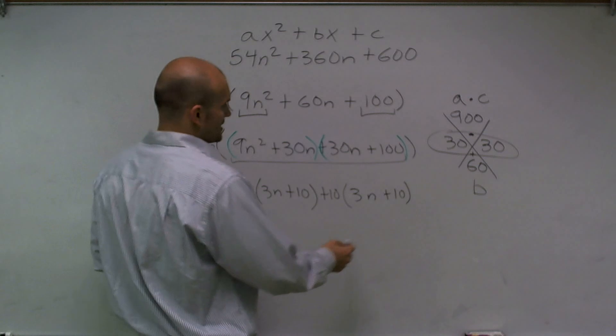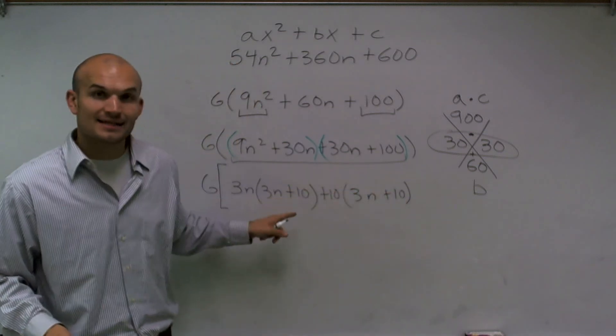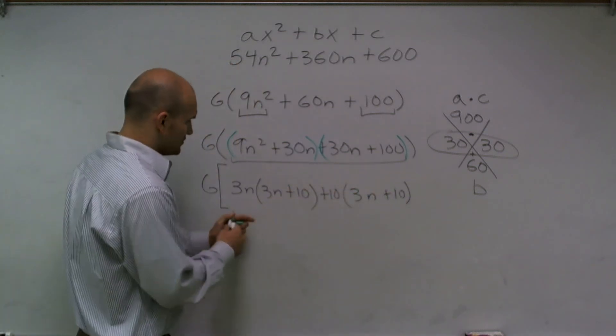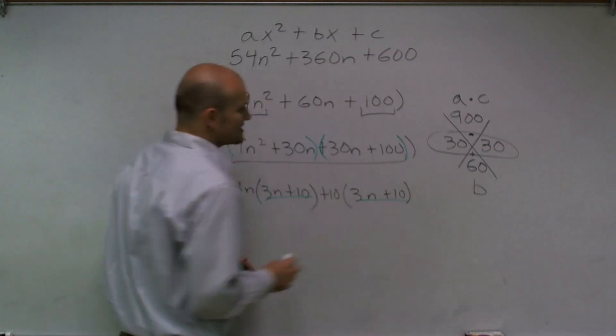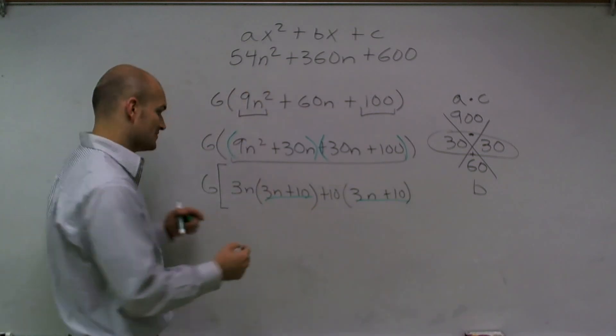Now what I notice, I say what can I factor out of these two terms? Well I can both factor out—you notice that 3n plus 10 and 3n plus 10 are the same. So now I can factor that out.